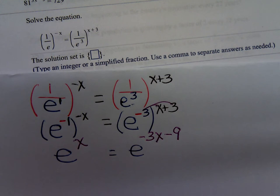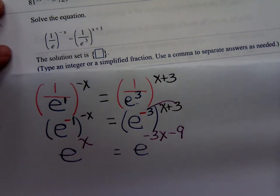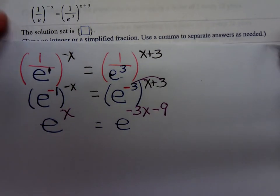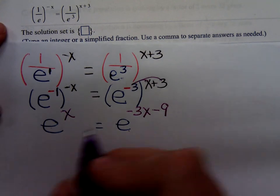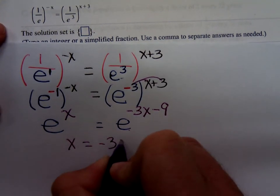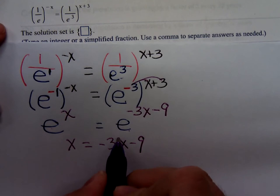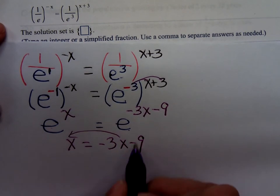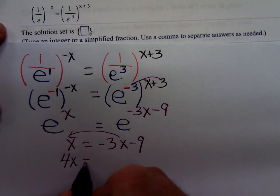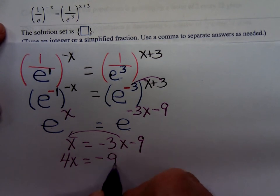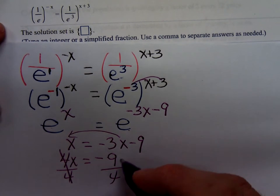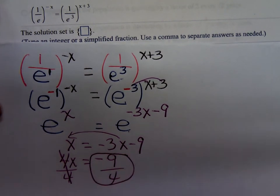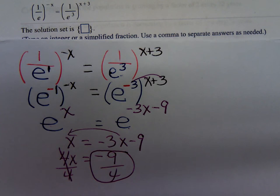So, drop the e's and you're solving x equals negative 3x minus 9. Just a linear equation. Add 3x. 1x plus 3x is 4x. Divide by 4. A negative 9 over 4.